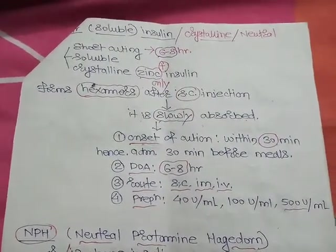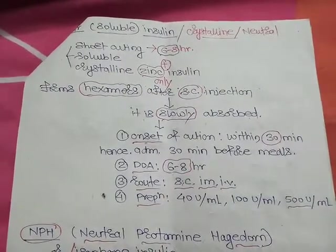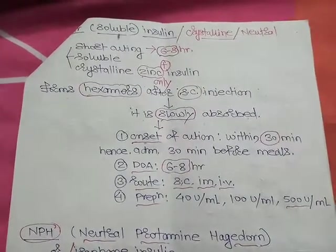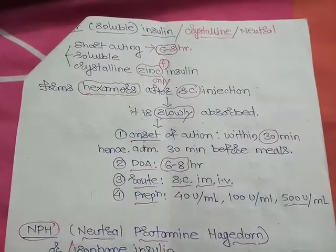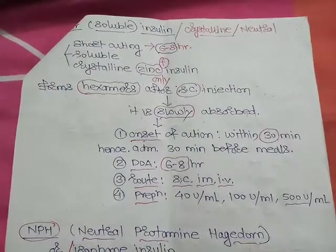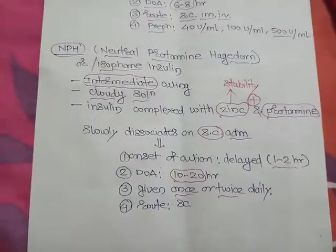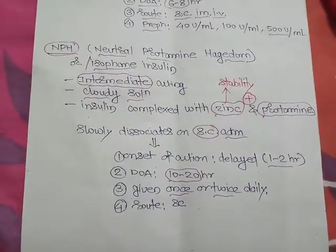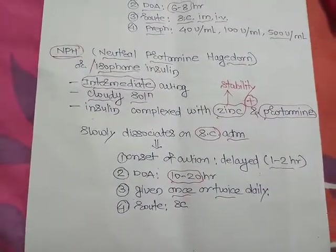Preparations available are 40 units per ml, 100 units per ml, and 500 units per ml. Then we have neutral protamine Hagedorn, also called isophane insulin.